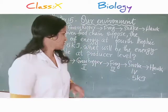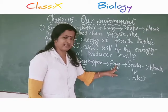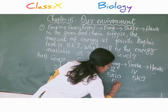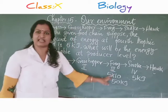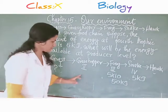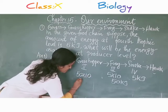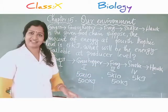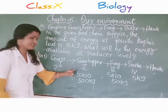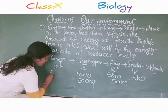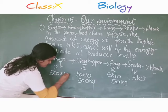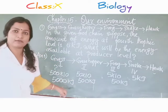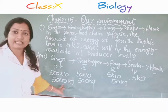That is our energy flow. So what will be the energy available at the 3rd trophic level? That is 5 into 10, which is 50 kilojoules of energy available at the 3rd level. Then what will be at the 2nd level? 50 into 10, that is 500 kilojoules of energy available at the 2nd level. Then the producer level — the 1st trophic level. The energy will be 500 into 10, which is 5,000 kilojoules of energy available at the first trophic level. That is our answer.